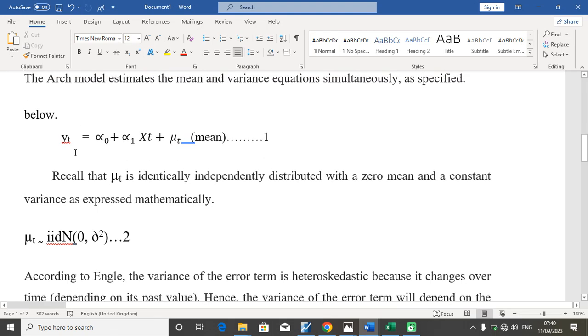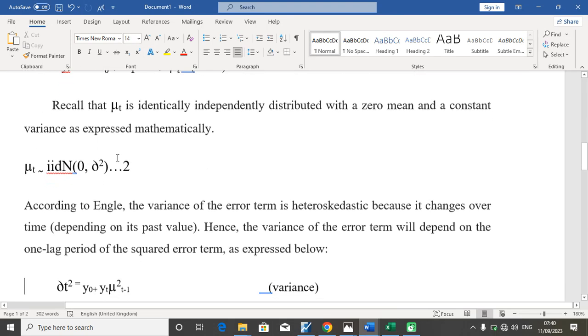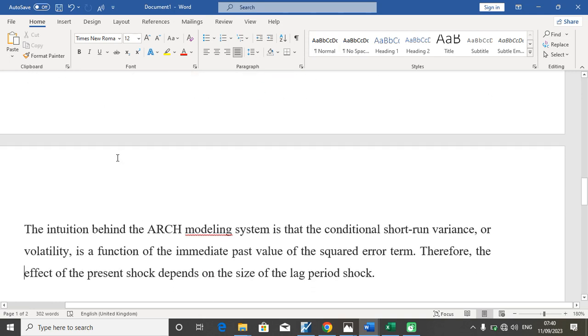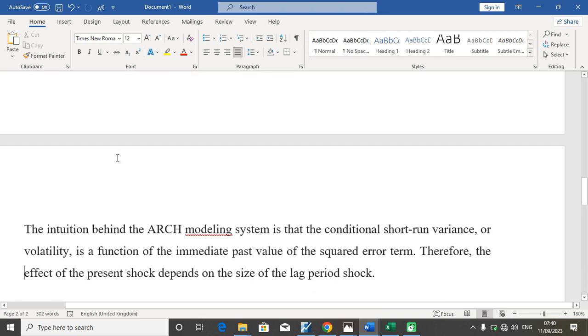So the intuition behind the ARCH model or modeling system is that the conditional short-run variance, or the volatility, is a function of the immediate past value of the squared error term. Therefore, the effect of the present shock depends on the size of the lag period shocks.